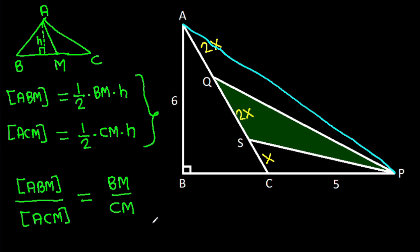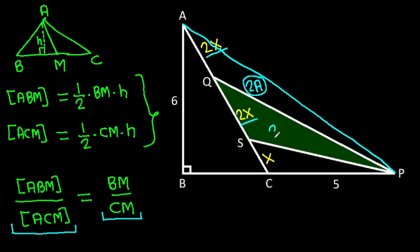So the ratio of areas equals the ratio of bases. We have AQ = 2X and QS = 2X, so if this area is 2A, then this area will also be 2A. And CS is X, so this area will be A.